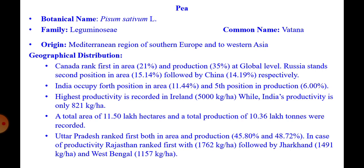The Mediterranean region of Southern Europe and Western Asia is considered the origin of pea. Regarding geographical distribution, Canada ranks first in area and production — 21 percent and 35 percent respectively at global level. Russia stands in second position in area, followed by China. India occupies fourth position in area, at about 11.44 percent of the global area, and fifth position in production at 6 percent of global production.